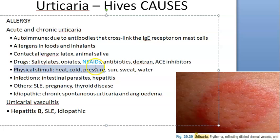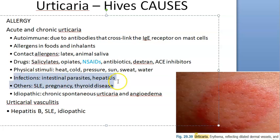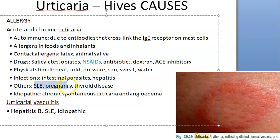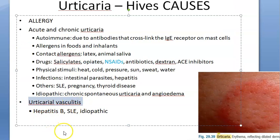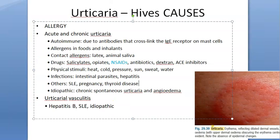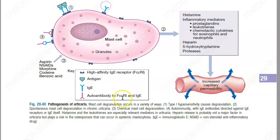Physical triggers such as heat, cold, pressure, sun, sweat, and water can also cause urticaria. Infections, parasites, and hepatitis have been implicated. Autoimmune conditions like systemic lupus erythematosus (SLE), pregnancy, and thyroid disease are also causes. Idiopathic cases can happen spontaneously. Urticarial vasculitis, hepatitis B, and SLE are also blamed as causes.